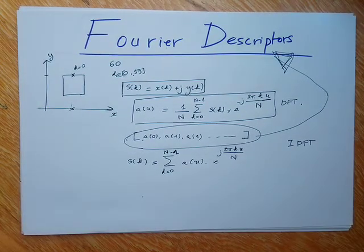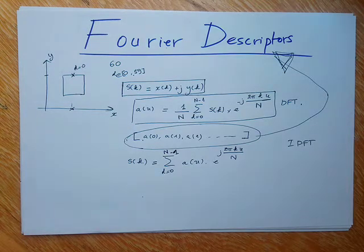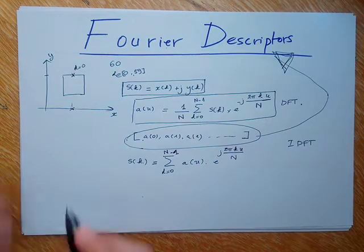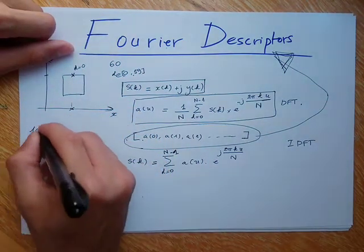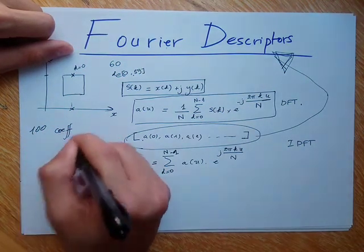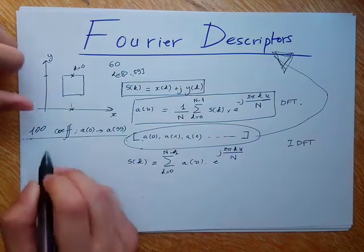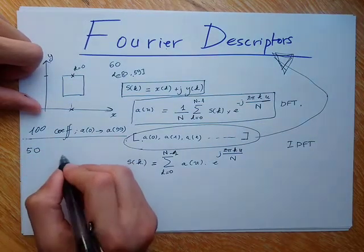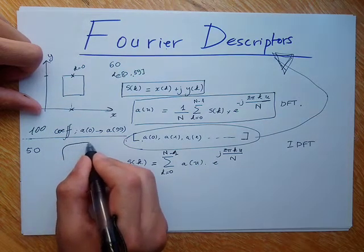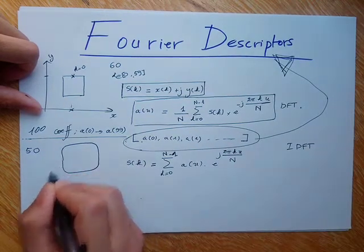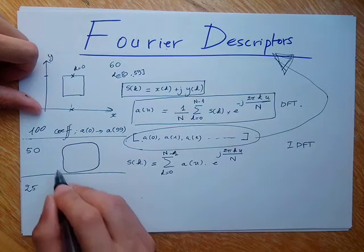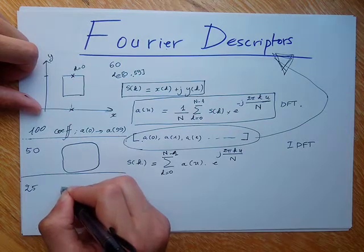Why am I talking about how to restore the shape? Normally I should be interested in getting the Fourier descriptors rather than restoring the shape. This is important just to visualize the effect of decreasing the number of Fourier coefficients. Say, to get this exact shape I need 100 coefficients — a(0) to a(99). If I decrease to 50, I get something close to a rectangle but with smoother corners. If I decrease again, I get an even smoother approximation of the rectangle.